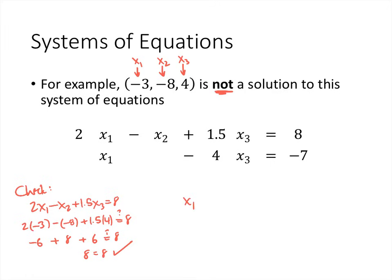Now I have to also check the second equation, and if there are more equations I would have to check all of those. I'm going to plug in, I get negative 3 minus 4 times 4, does that equal negative 7? That's negative 3 minus 16, but negative 3 minus 16 is negative 19, and that does not equal negative 7. So that's why this is not a solution. It has to be a solution to all of the equations at the same time.